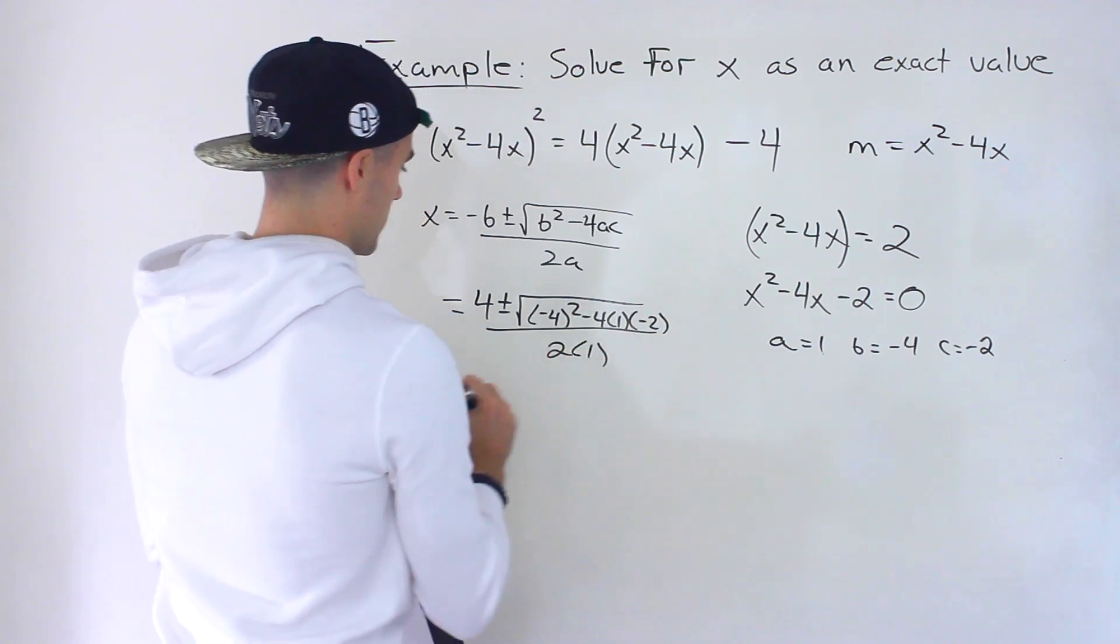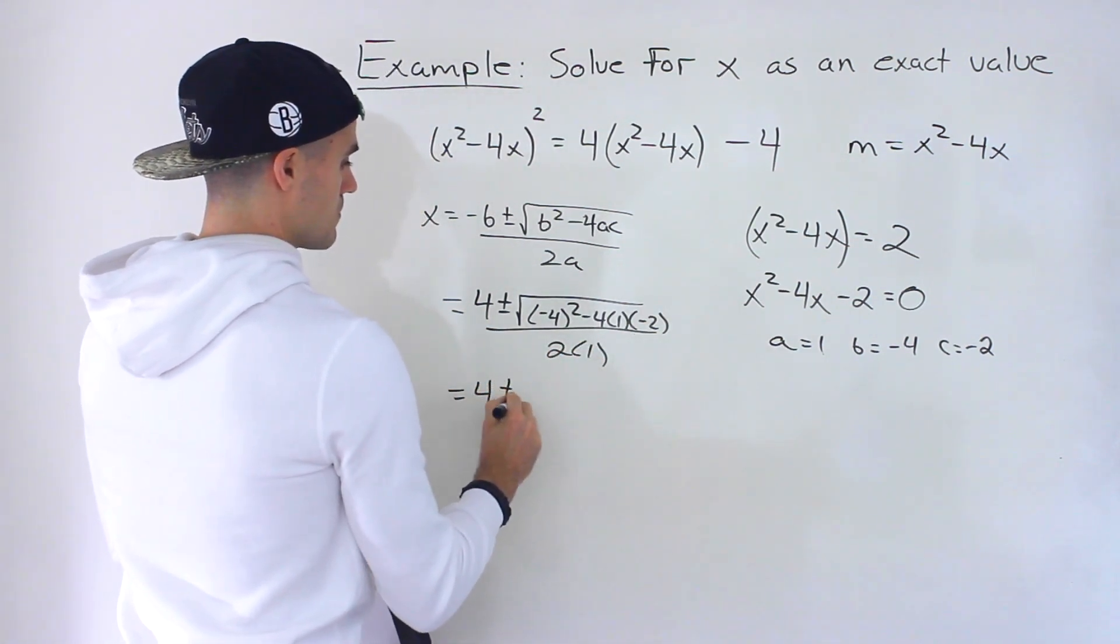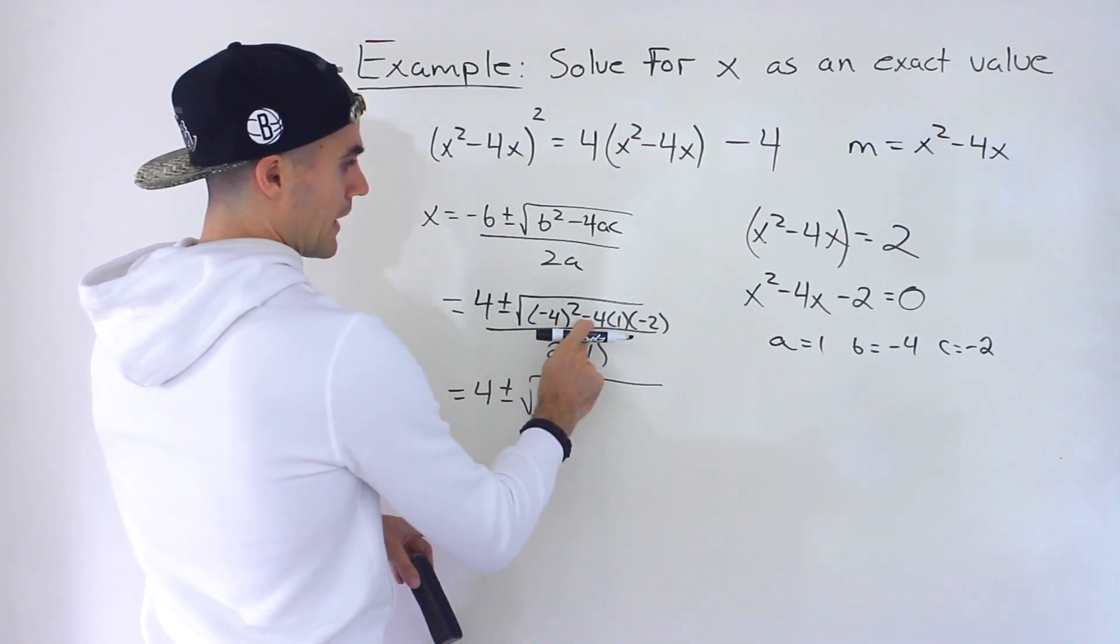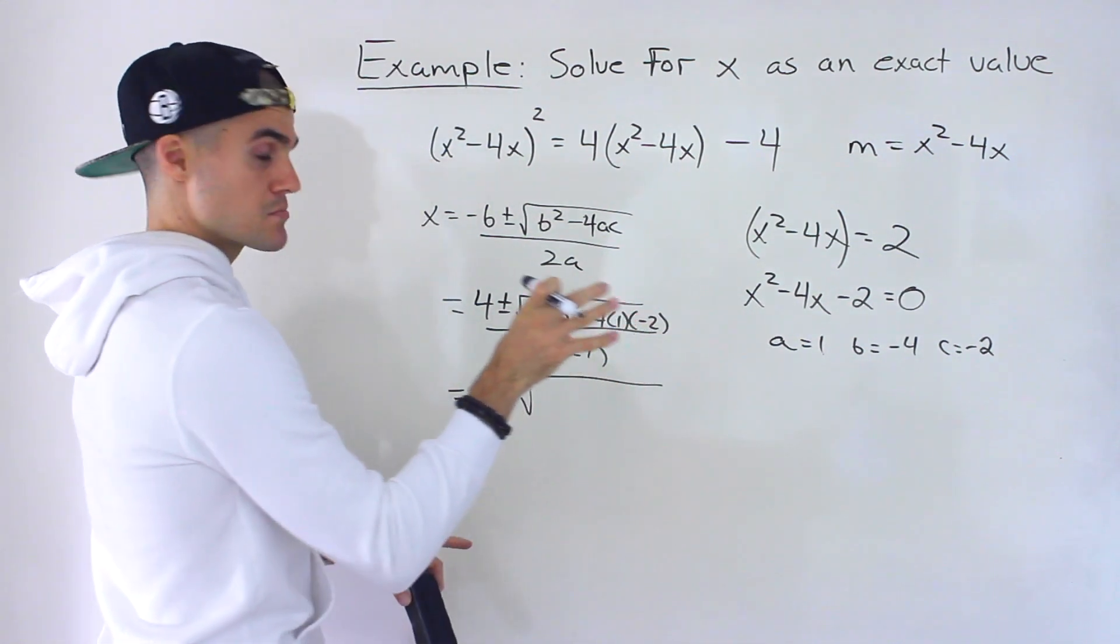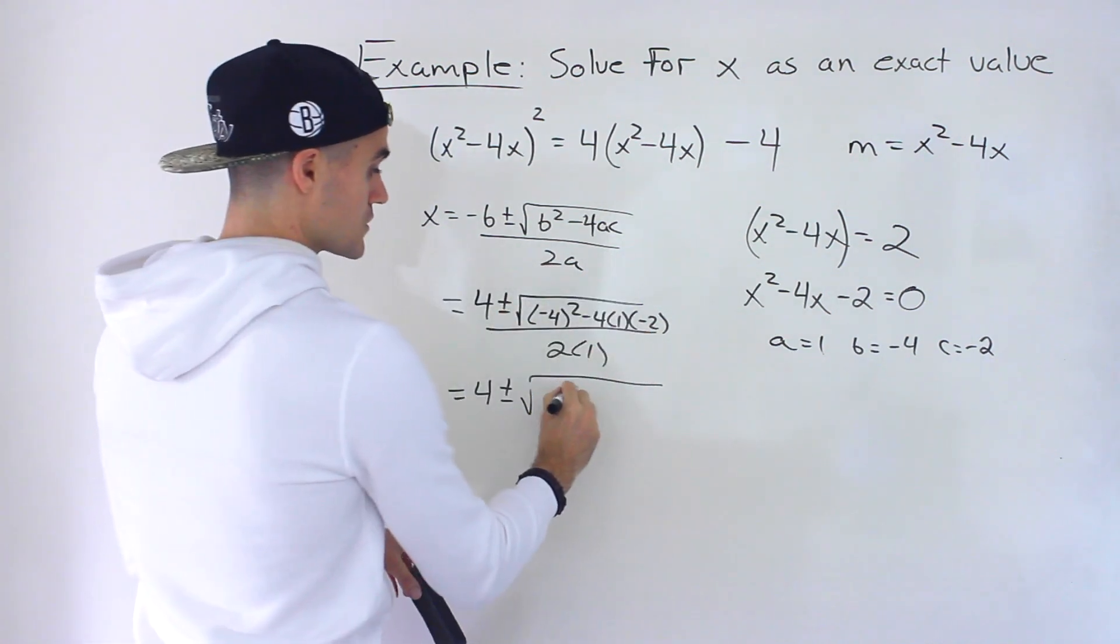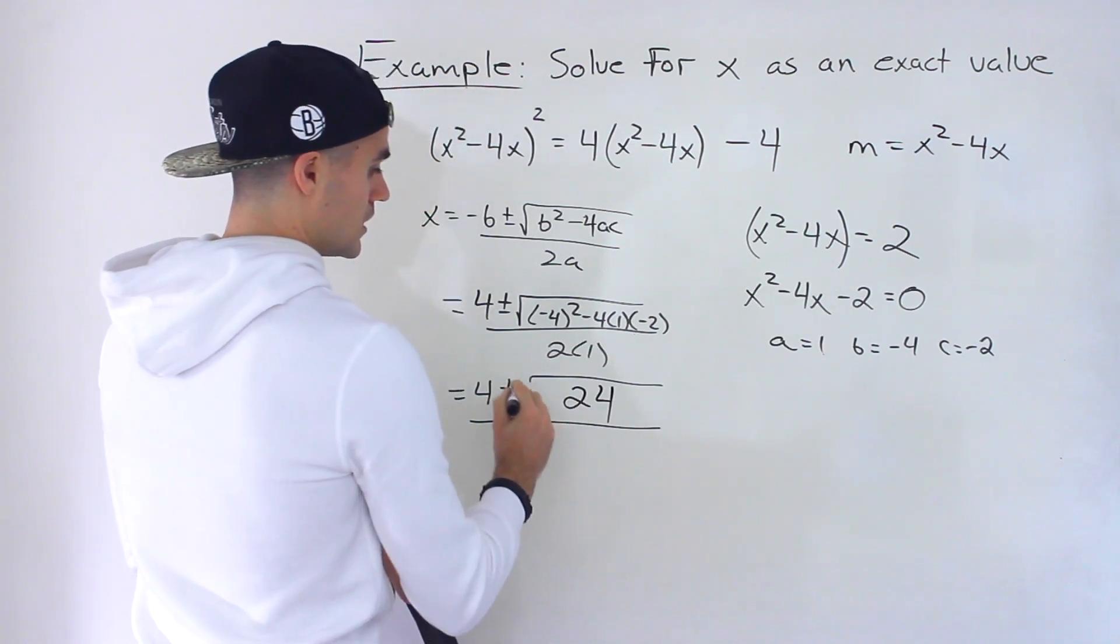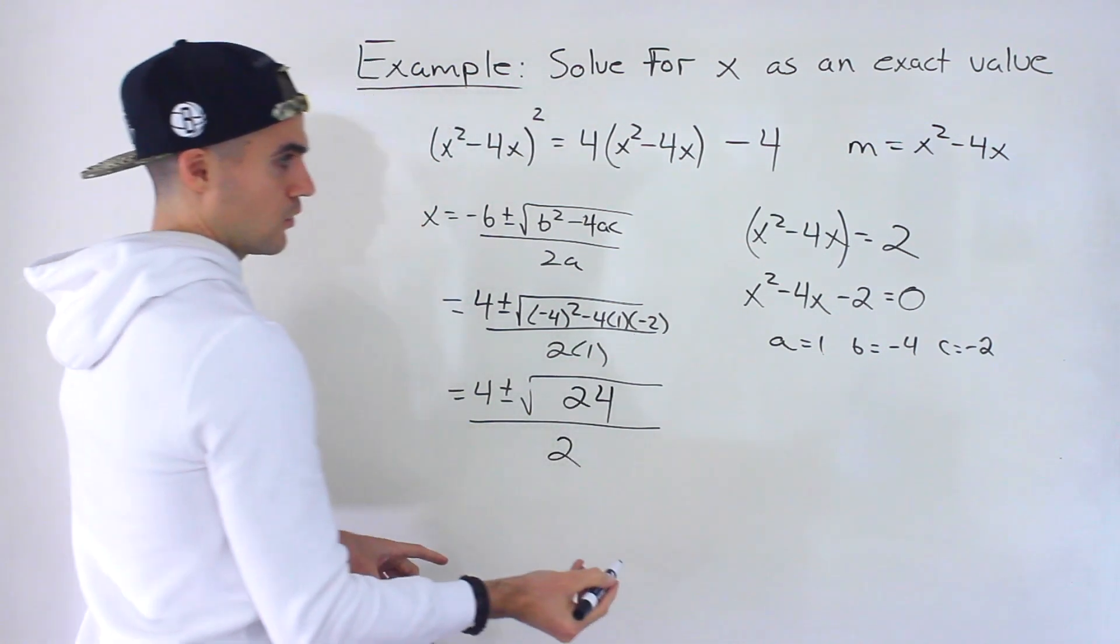So we'd have 4 plus or minus the square root, this would be 16 minus 4 times 1 times negative 2 would give us positive 8 so 16 plus 8 would give us 24 over here. So we'd have 4 plus or minus root 24 over 2.